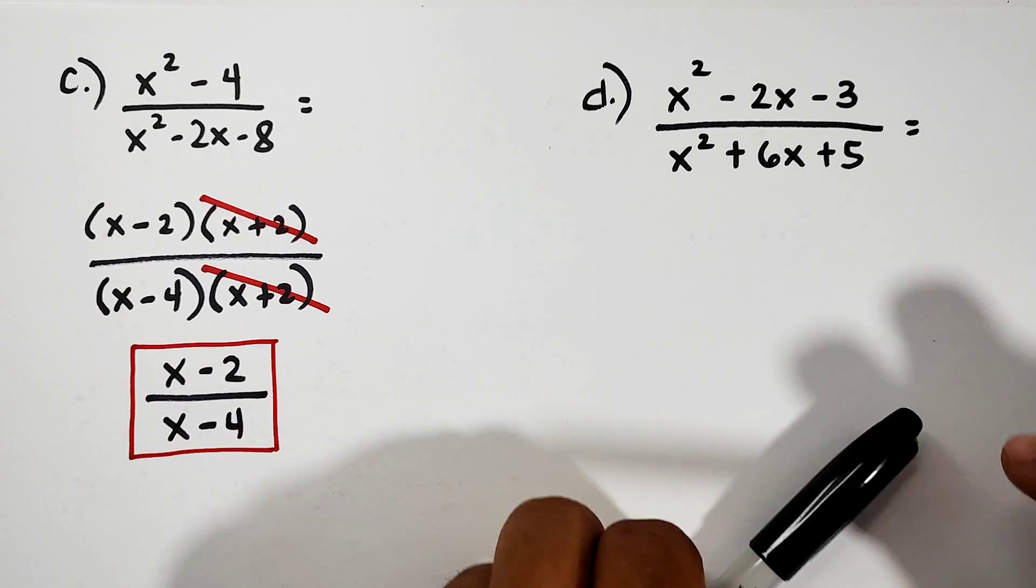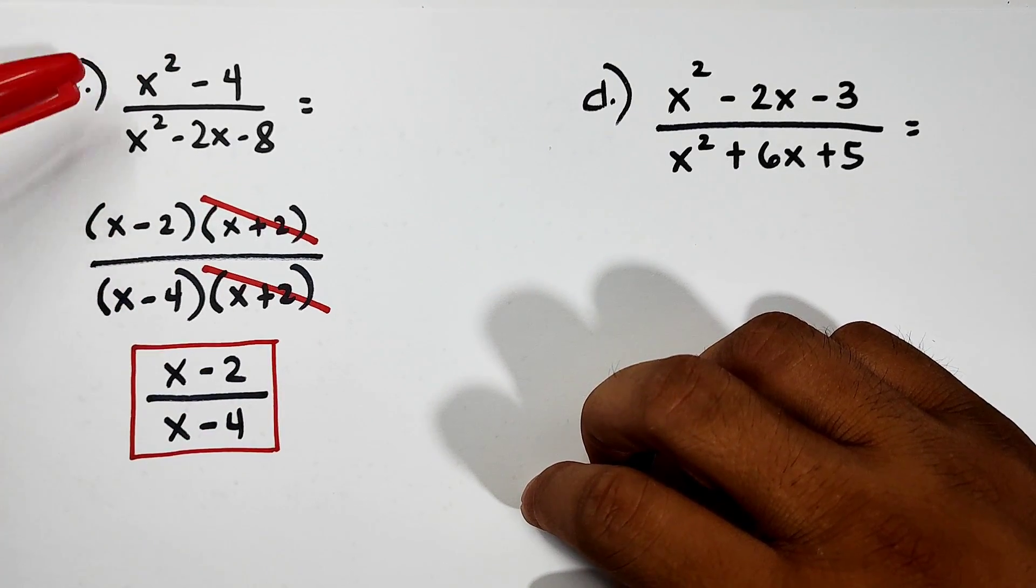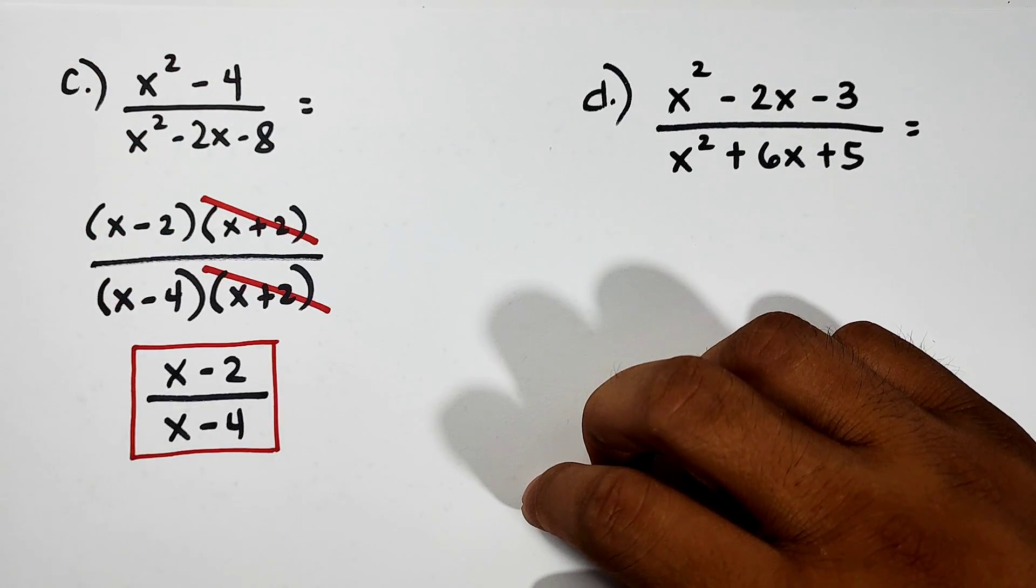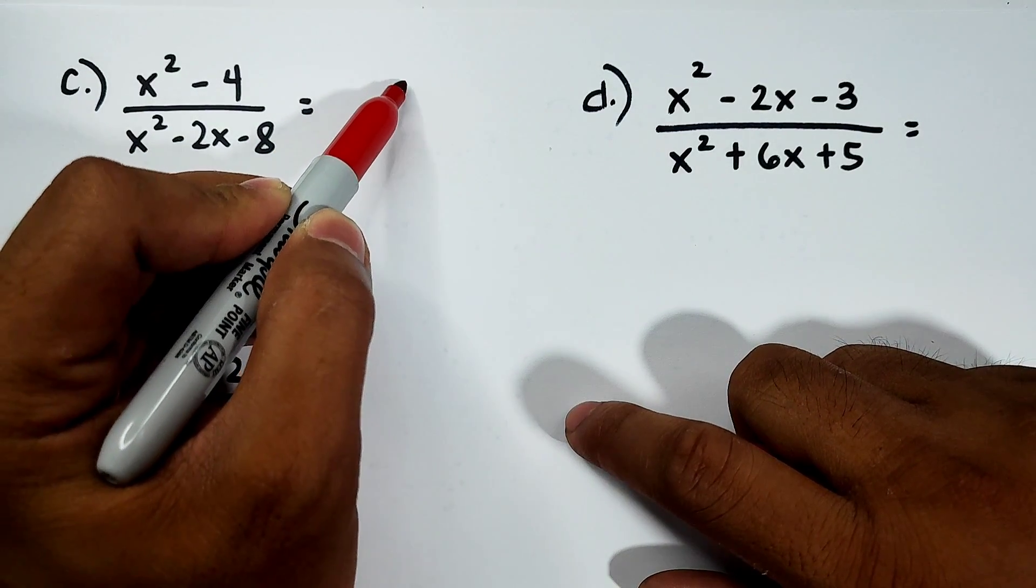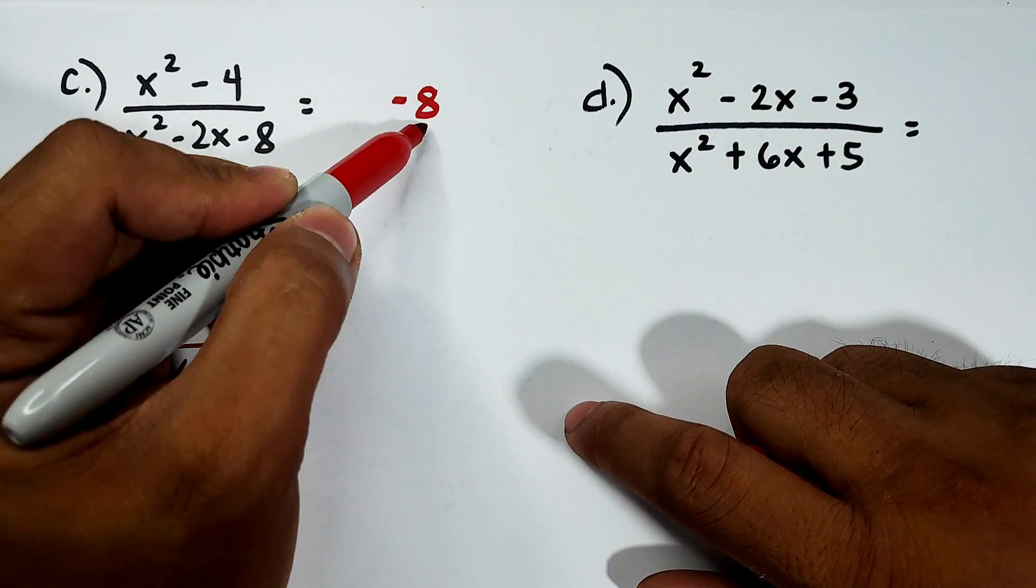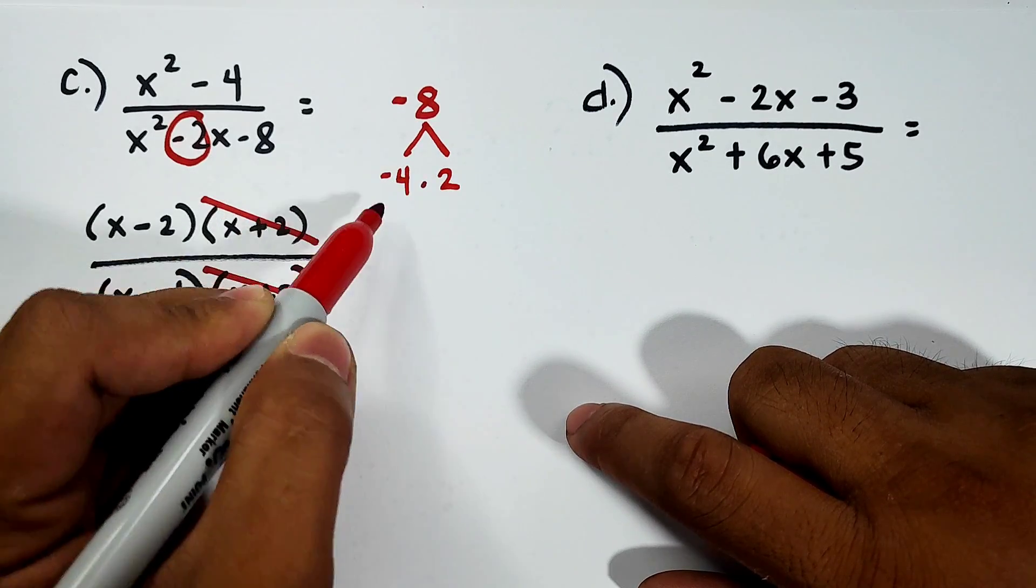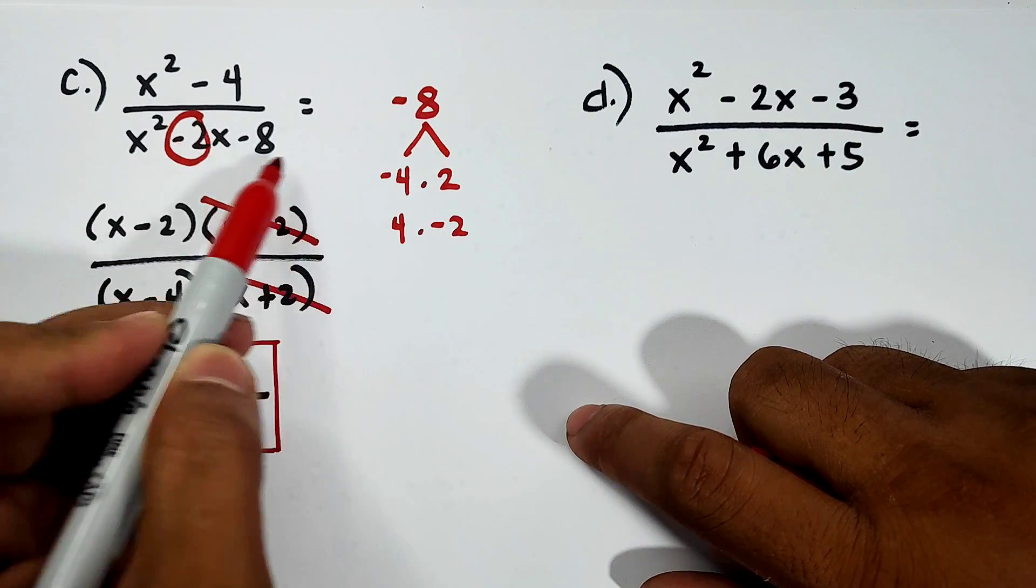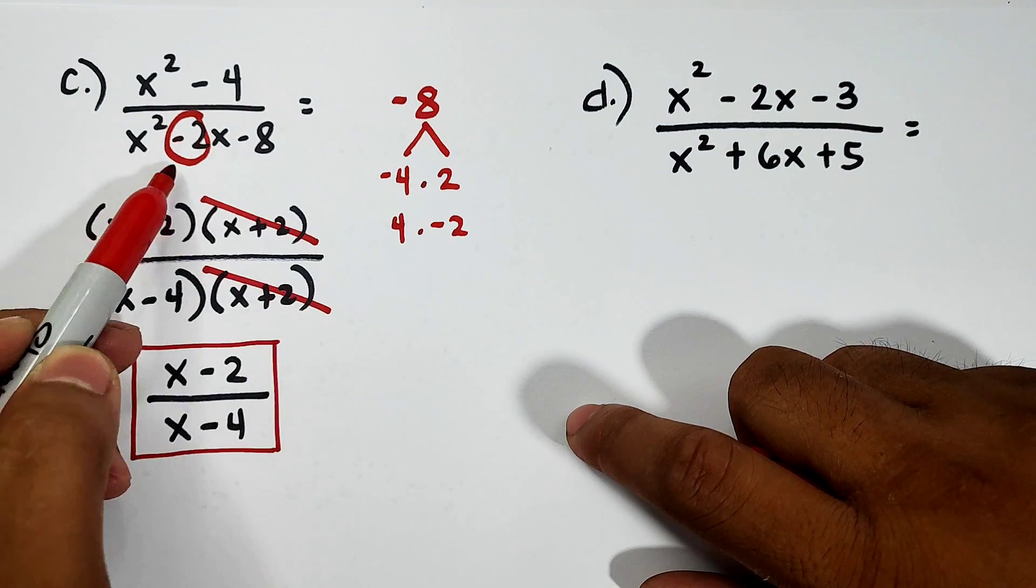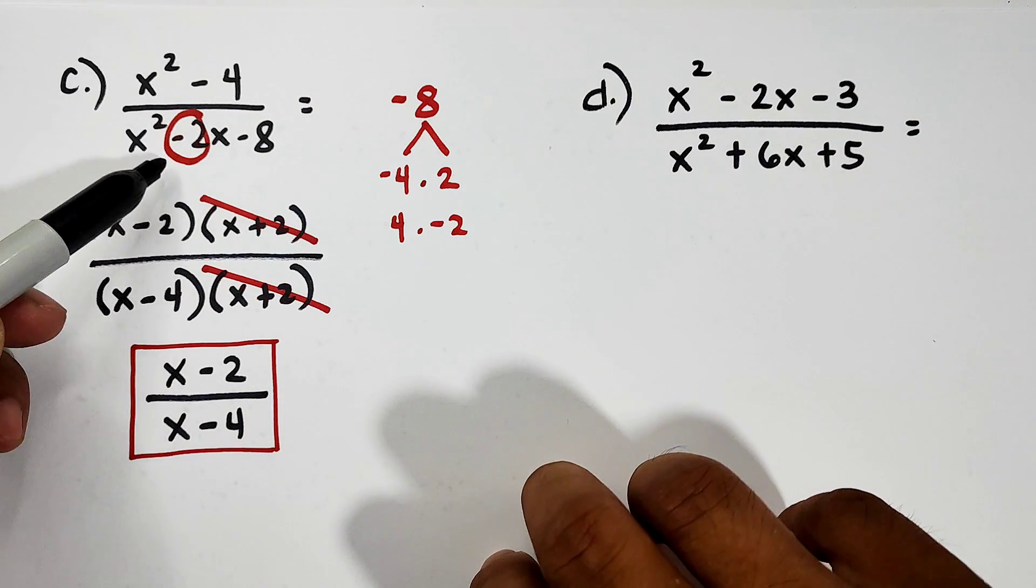How did you get the factors? For this numerator, get the square root. Square root of x² is x. Square root of 4 is 2. And then, you put minus and plus. For negative 8, what we need is to think of factors of negative 8 that will give us negative 2. And that is negative 4 times 2. When you add them, negative 4 plus 2 will give you negative 2. That's why our answer is (x - 2) over (x - 4). I hope you got this - difference of 2 squares and then trinomial factoring.